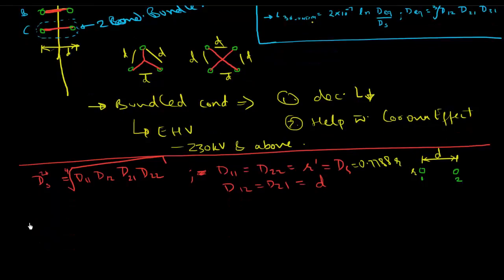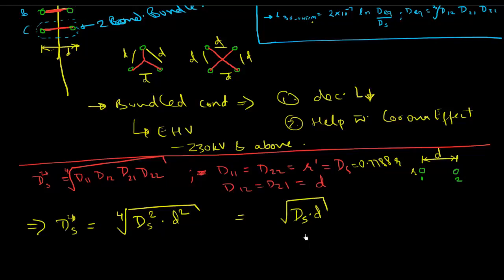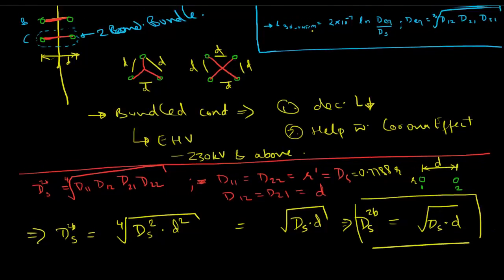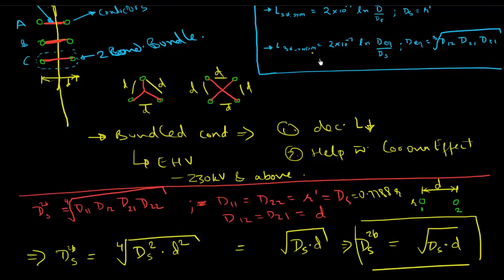If we substitute all of this in here, then we get ds^2b is equal to ds squared times d squared to the fourth root, which should give us nothing but ds times d and the square root of that. So I'm going to sum that up here: it is equal to the square root of ds times d. And this is what I wanted to formulate today - this is the value for bundle conductors that you'll use in this equation, but ds will now be substituted by ds^2b.